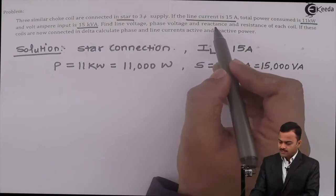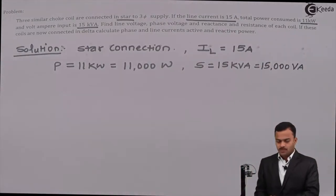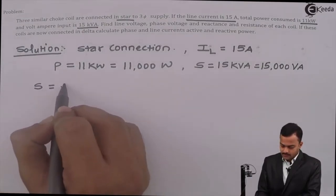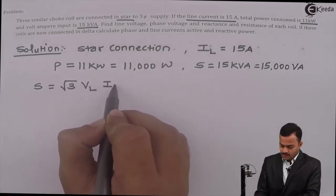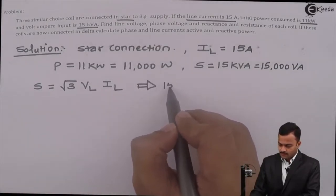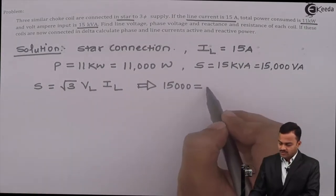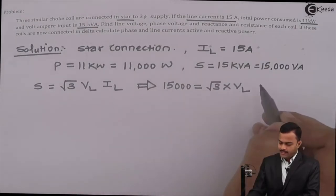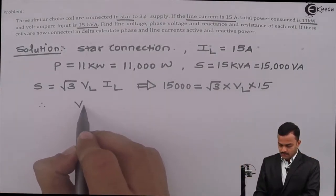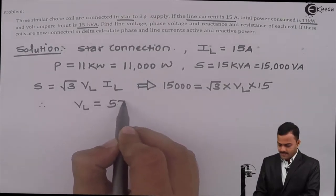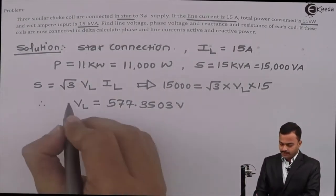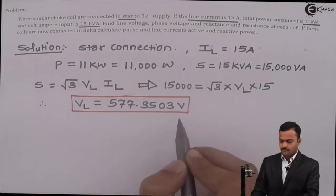Let's start by finding line voltage. Apparent power is given as S = √3 · VL · IL. In this expression, S = 15,000, IL = 15 ampere, and VL is unknown. Solving gives line voltage VL = 577.3503 volt.